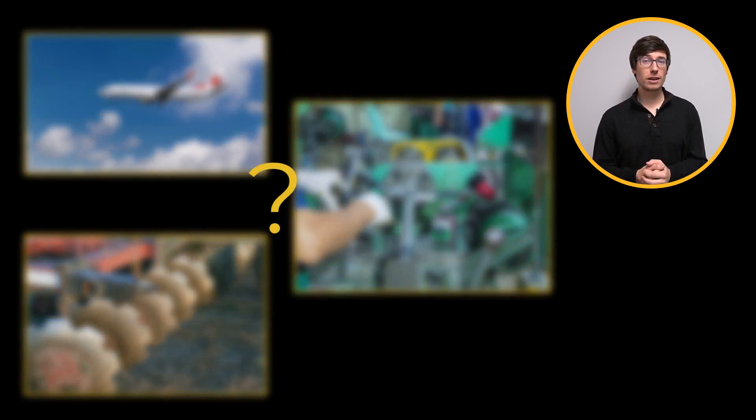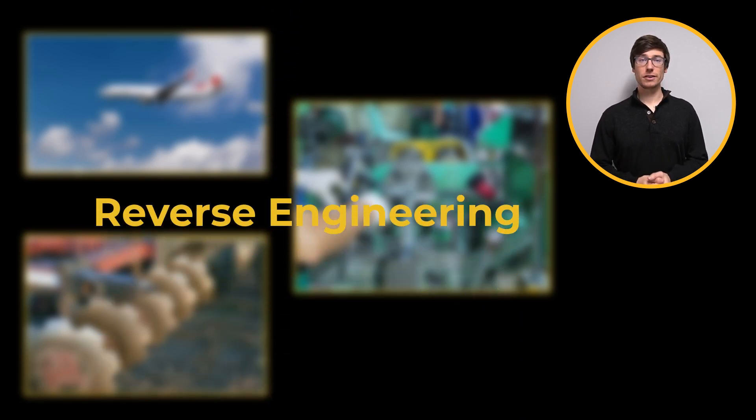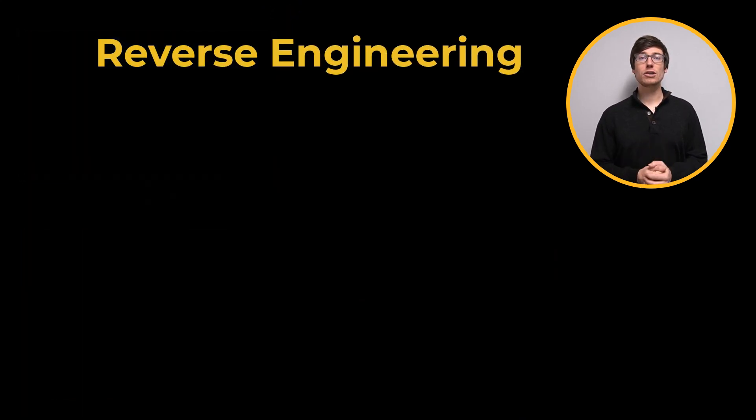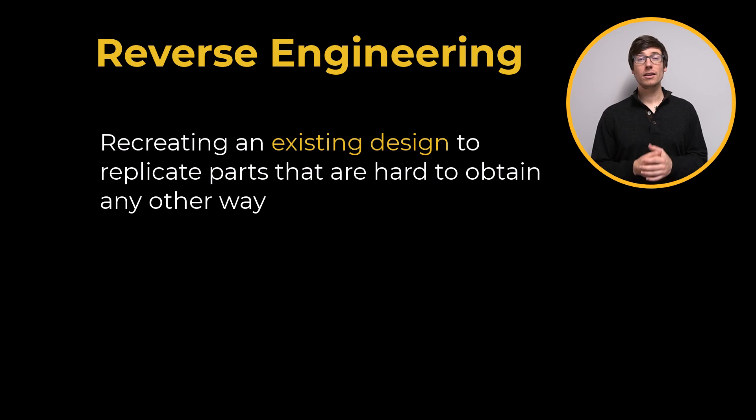So how do you fix a machine when you can't order the part? The answer is reverse engineering, the action of recreating an existing design to replicate or replace parts that are impossible or hard to obtain any other way.